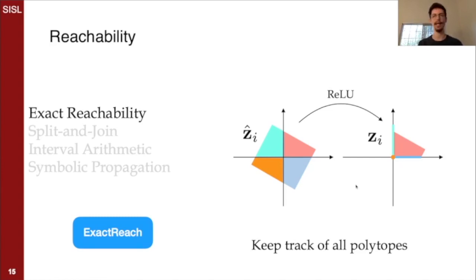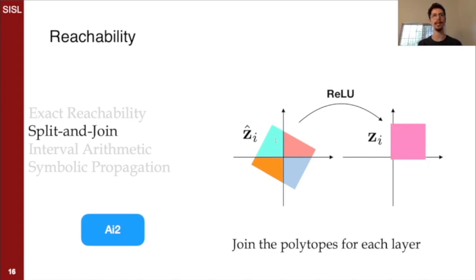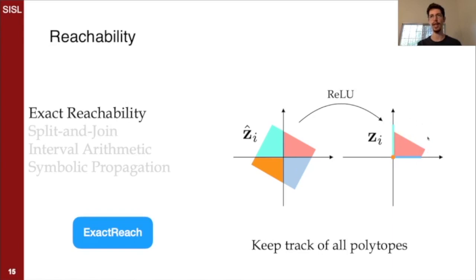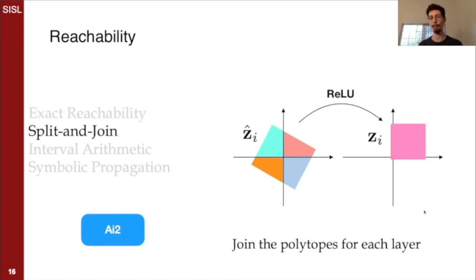One approach we can take is split and join. So every time we split and then project these sets, we then join them again, over-approximating them with some other set. And now we're back to one. Now we only have to keep track of a single set, but the price we pay is over-approximation. We no longer have a complete algorithm, although it is still sound.